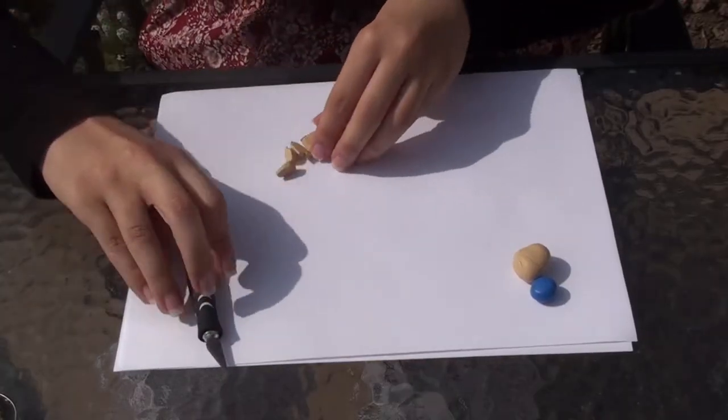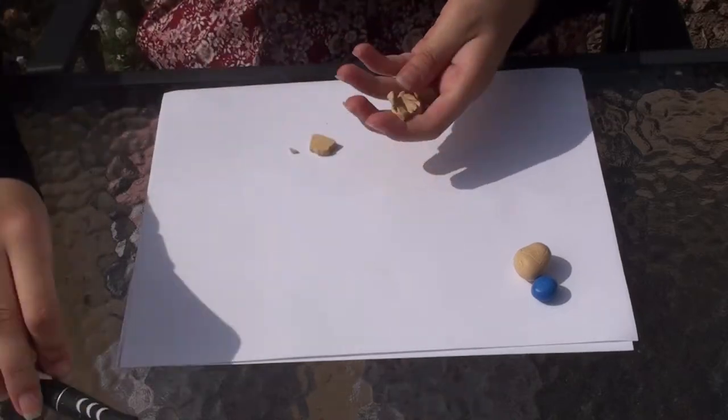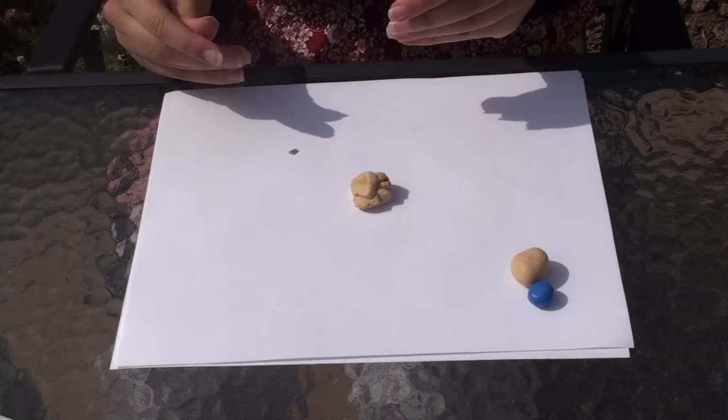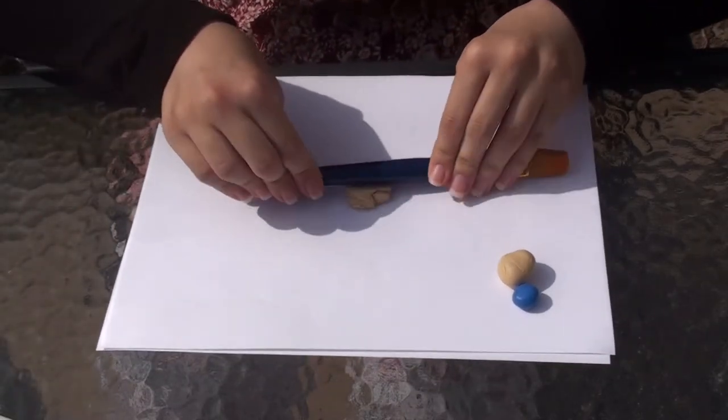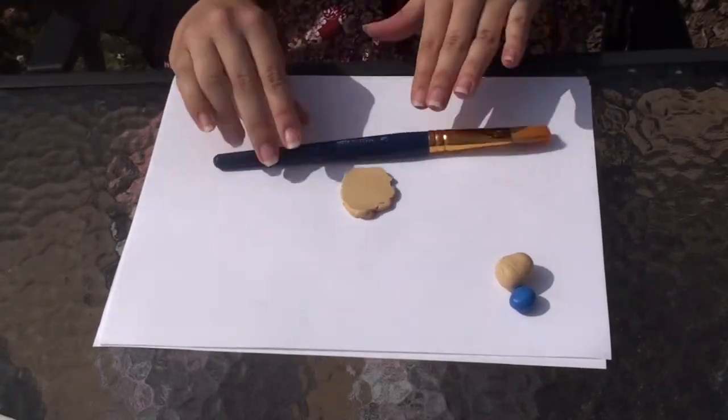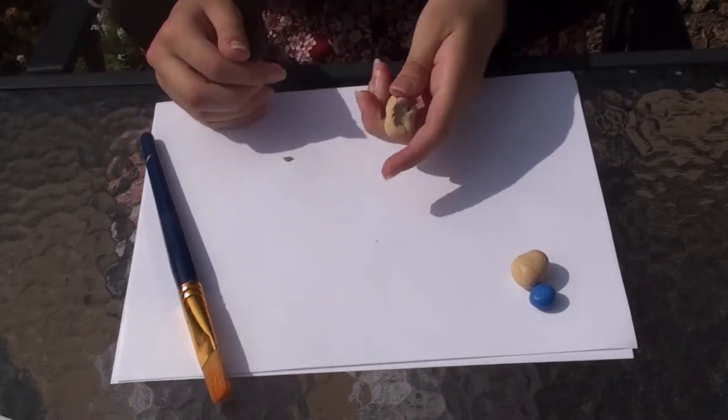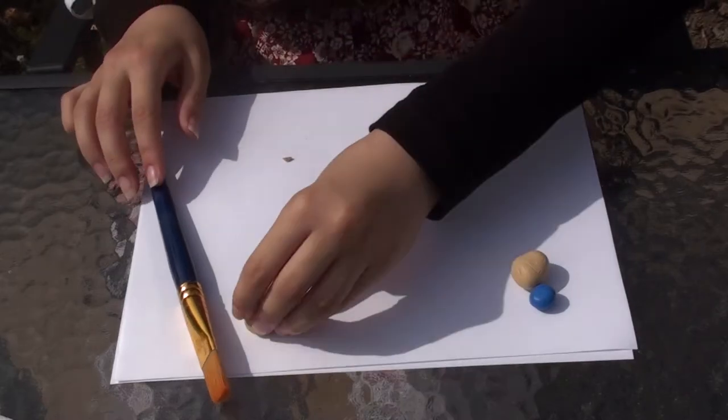Before we start we need to condition the clay to make it easier to work with. This can be done by playing around with the clay, cutting it into smaller pieces, and kneading it in your hands. The heat and moisture from your hands will soften the clay. If your clay is very hard and crumbly, adding a drop or two of baby oil will also help soften it right up.